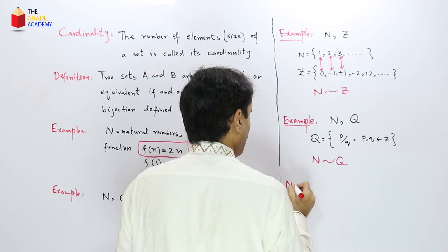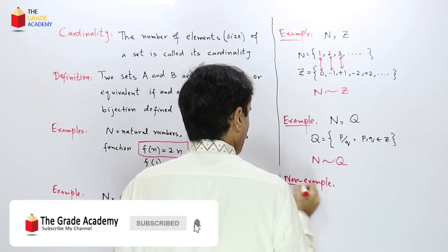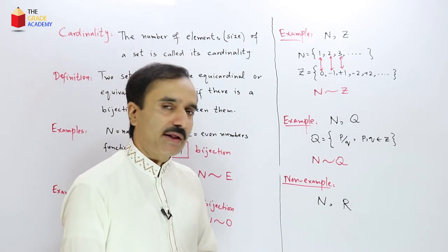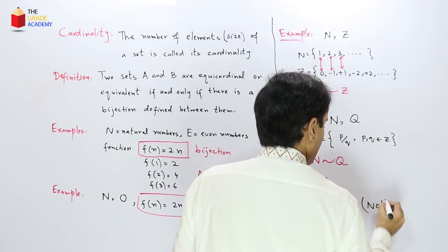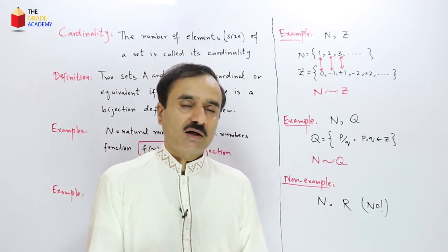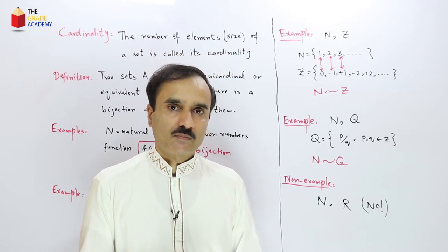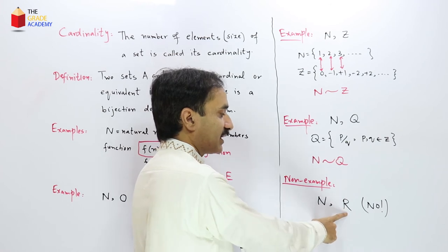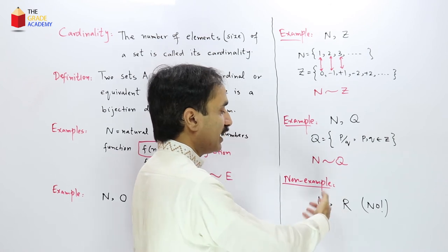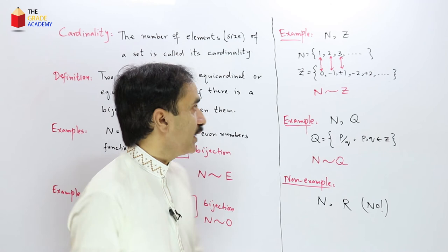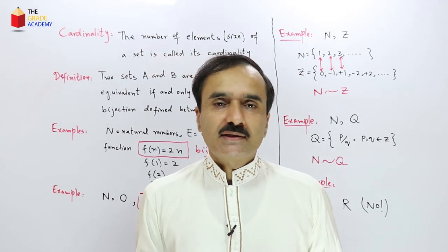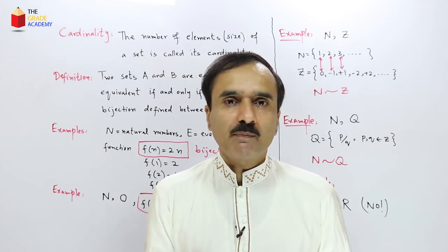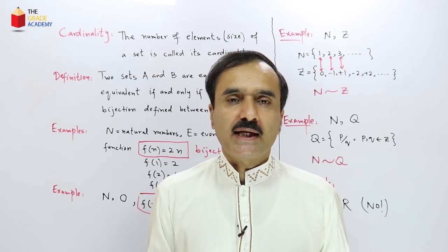Now let us consider a non-example: the set of natural numbers and the set of real numbers. Are they equicardinal or equivalent? No, the answer is no. The set of natural numbers and the set of real numbers are not equicardinal — they do not have the same size, and we cannot define a bijective mapping between N and R. Both are infinities, but the set of real numbers is a bigger infinity than the infinity of natural numbers.